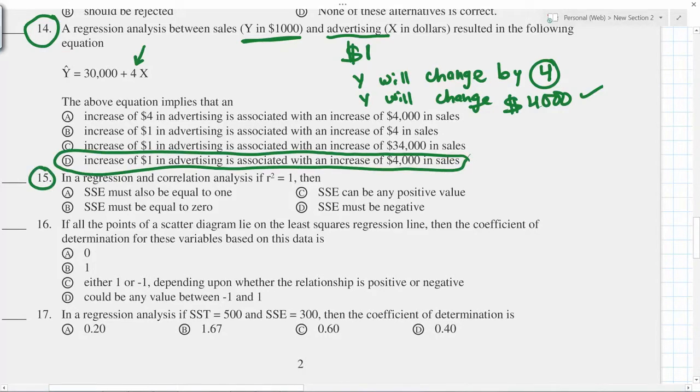If r square equals one, r square will be one when you have x and y all exactly on the same line. All the dots are exactly on the same straight line, then only r square is one. And this will happen when there is no error, the sum of squares due to error is zero.